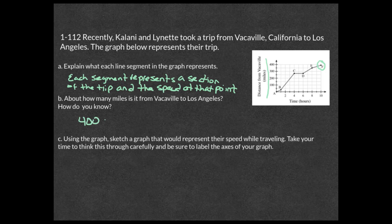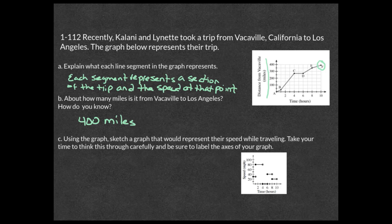Part c says: using the graph, sketch a graph that represents their speed while traveling. Label the axes carefully. I grabbed the table from the homework help to explain what happens. Looking at the first hour of the graph, they're going about 30 miles per hour.